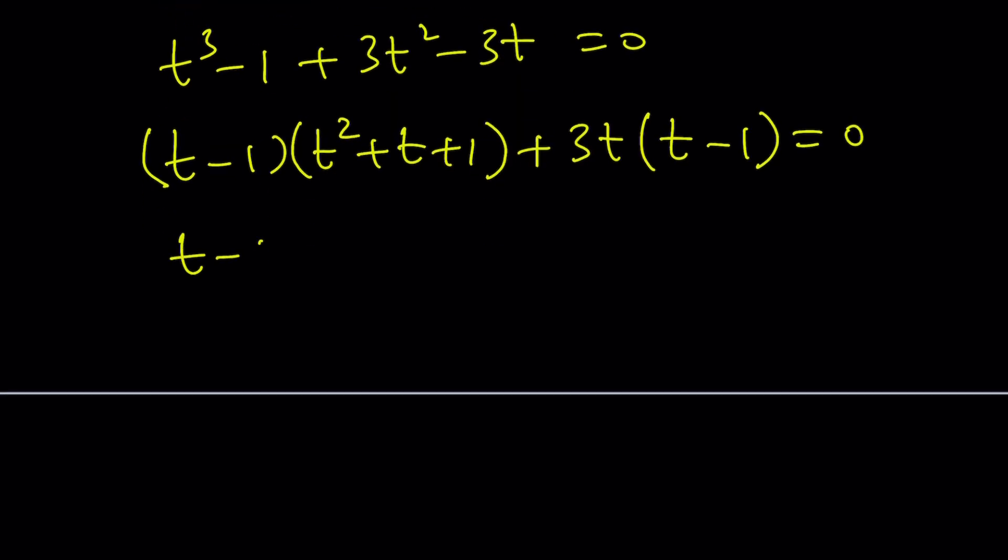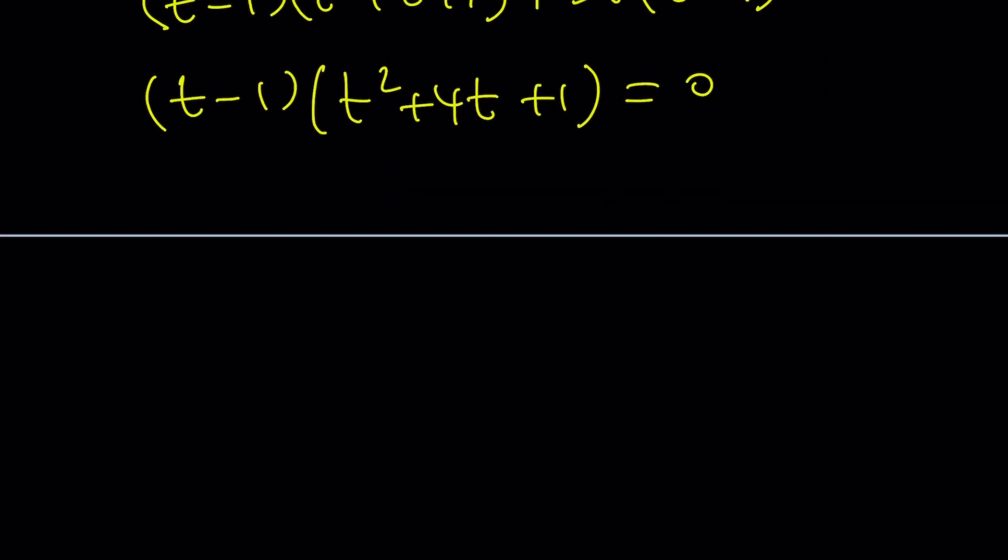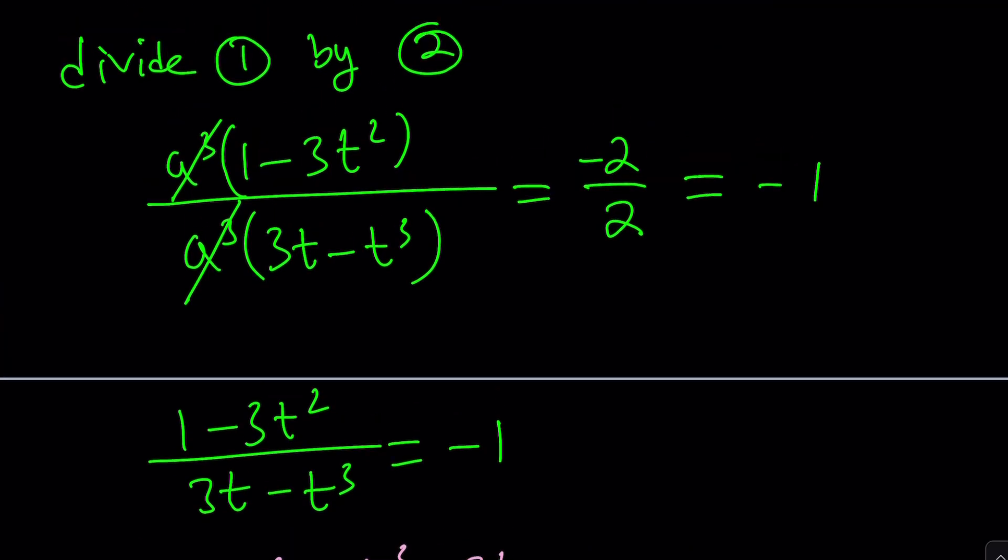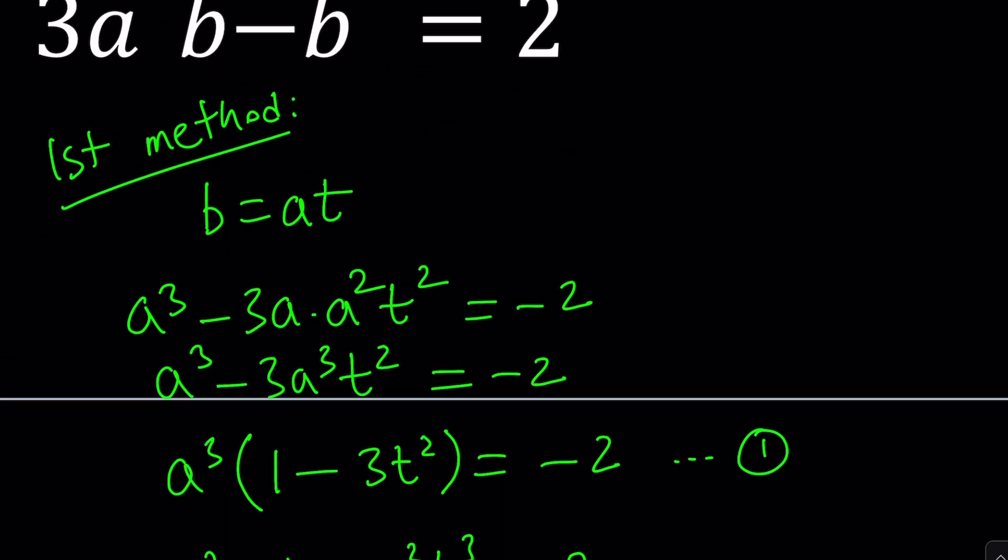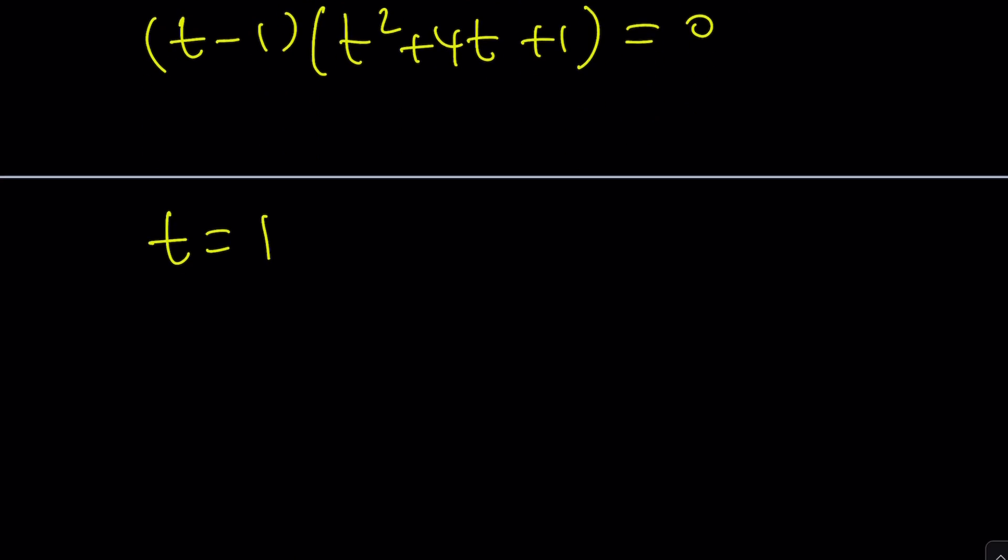Taking out (t - 1): (t - 1)(t² + t + 1 + 3t) = (t - 1)(t² + 4t + 1) = 0. From here, we get t = 1 and other solutions. t equals b/a, by the way. That's implied, but it's just a note.